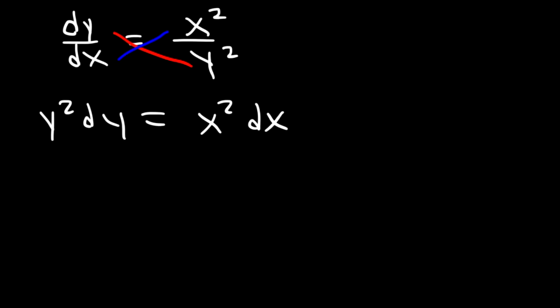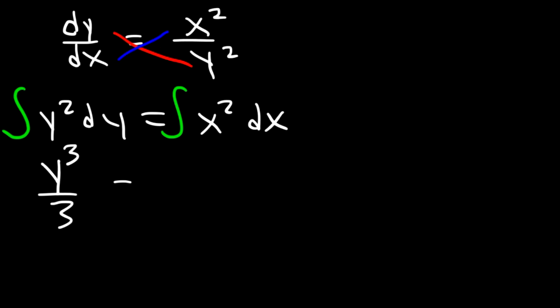Now that we've separated the variables, we can integrate both sides of the function. The antiderivative of y squared is y cubed divided by 3. The antiderivative of x squared is x cubed divided by 3. And on one side of the equation, we need to add a constant c.